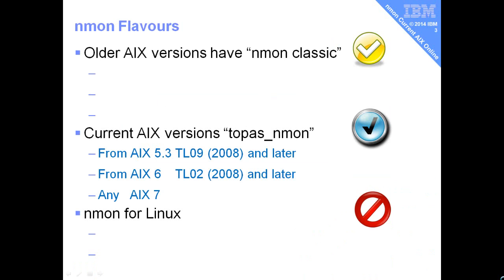What I mean by current version of AIX is quite generous — this is anything that came out after 2008. You can see the versions there: AIX 6 TL2 and AIX 7, probably what you'll be running these days. If you're running older versions, even some of these versions from 2008, 2009, and 2010, they are not fully supported now. If it needs a fix to address a bug you've reported, it will actually be asking you to upgrade to a later version.